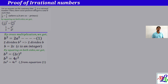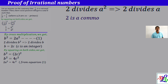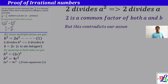Again, 2 divides a square, and that implies 2 divides a also. So 2 is a common factor of both a and b. We have established that 2 divides a and 2 divides b, meaning 2 is a common factor of both a and b.